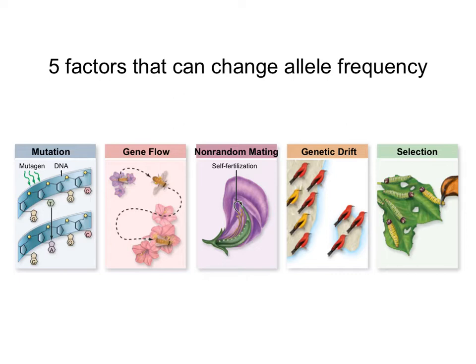So the first one is mutation. If the DNA is changing, the genes that the DNA is coding for — that will result in a change in the allele. Gene flow: if populations are bringing in new alleles, or alleles in the population are leaving to another one, that would change the allele frequency.